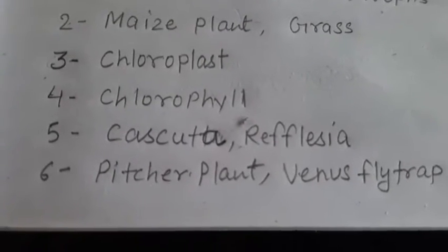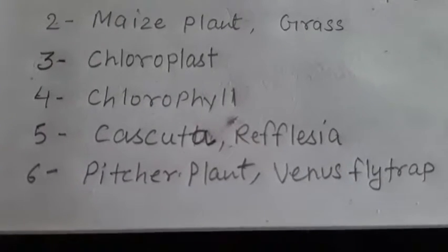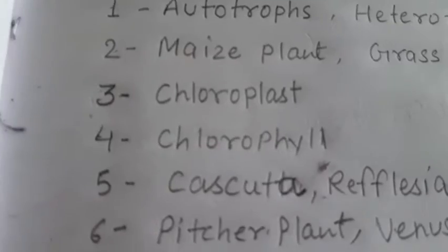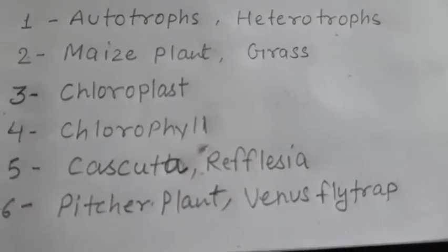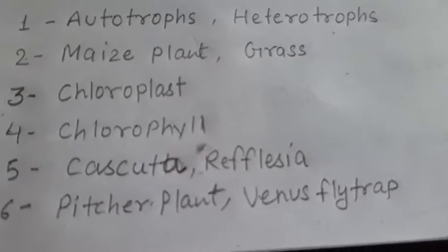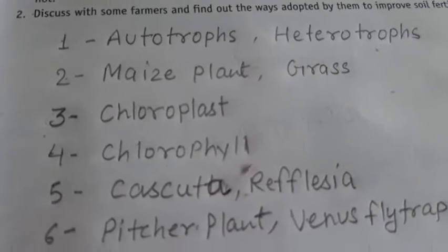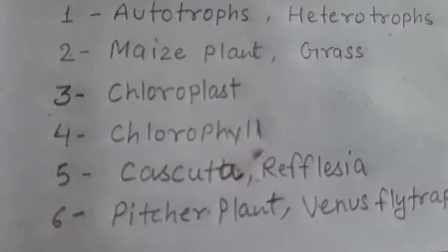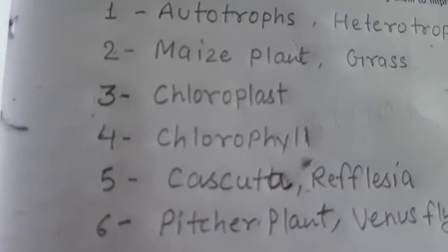Name two parasitic plants: Cuscuta and Rafflesia. Name any two insectivorous plants: the two insectivorous plants are Pitcher plant and Venus flytrap. So Exercise B is completed. Now we will do Exercise C, which is the short answer type question.